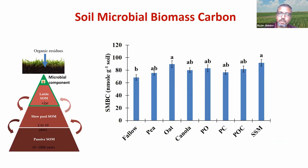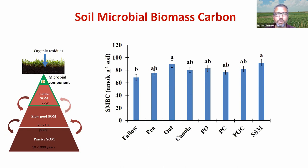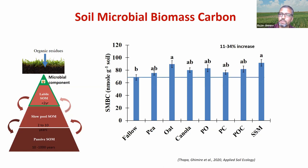We also look at the microbial component. Here you can see the active fraction — a very active organic matter component. Microbes are the regulators of all soil processes. When we look at their total biomass — how many microbes are present — we could see 11 to 34 percent more microbes with different cover crops than with fallow. That is our observation here, again within a three to four year timeframe.